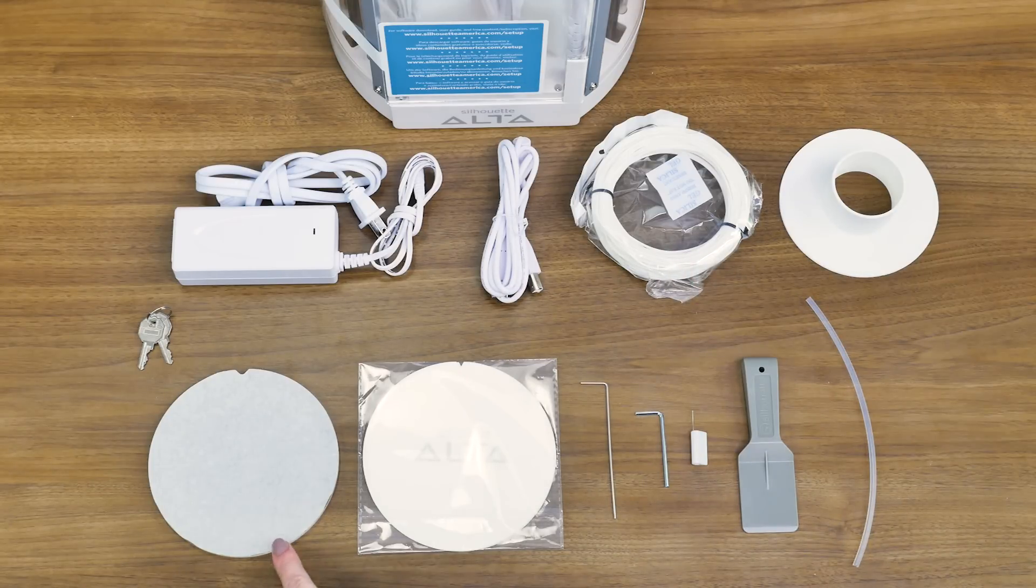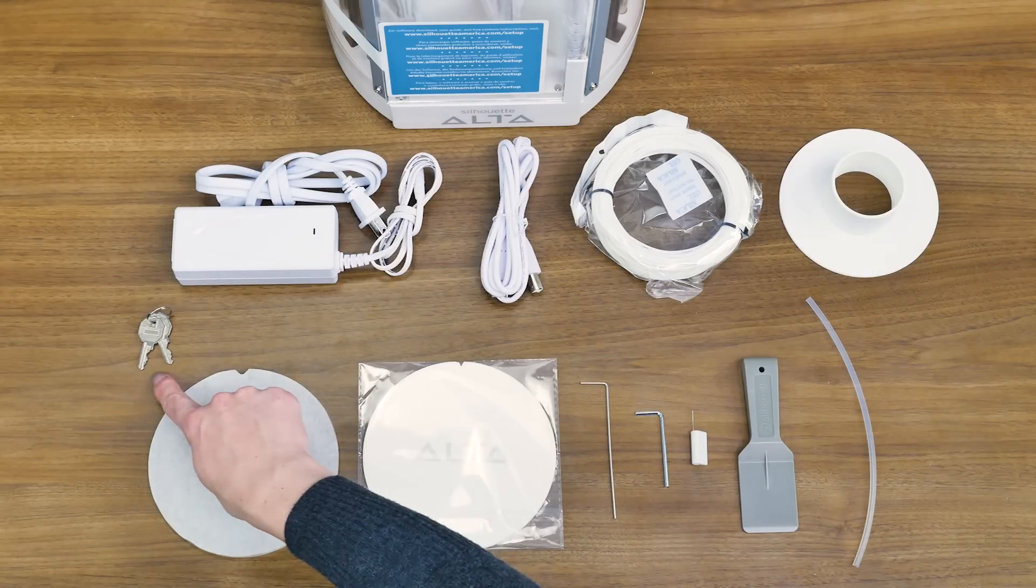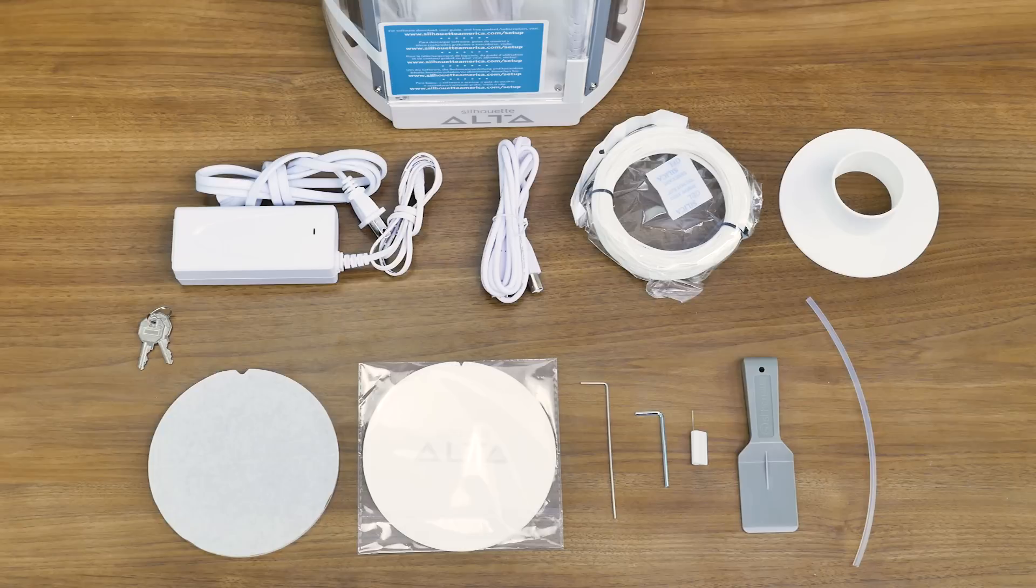A platform and platform tape sheets, two different sizes of hex keys, a filament tube, a nozzle cleaner, a spatula tool, and keys to lock and unlock the case surrounding the Alta.